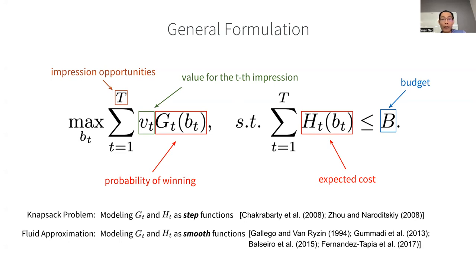So the value is tied to advertiser's objectives and is usually produced by a machine learning model. For example, if the goal of the ad is to maximize clicks, then vt is the predicted click-through rate. The most important objects in our framework are the gt and ht. They represent the probability of winning and the expected cost when bidding at bt.